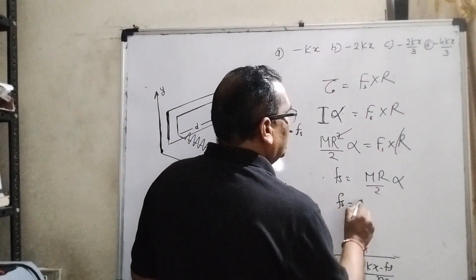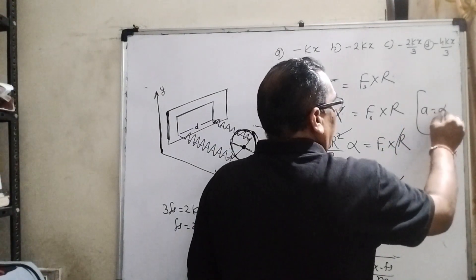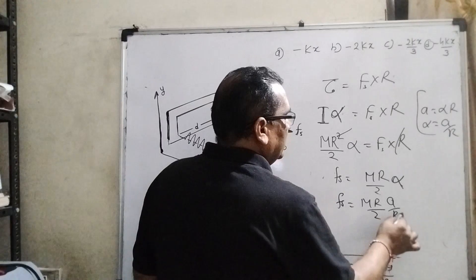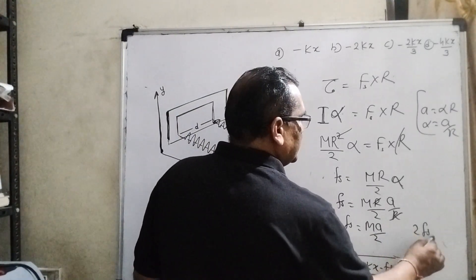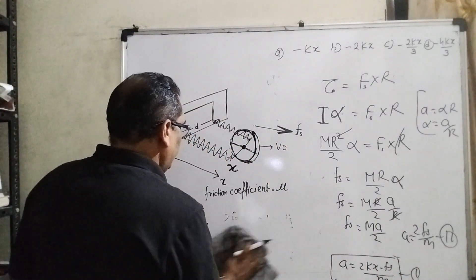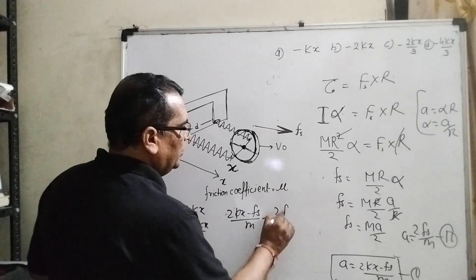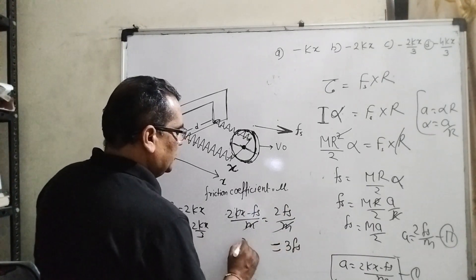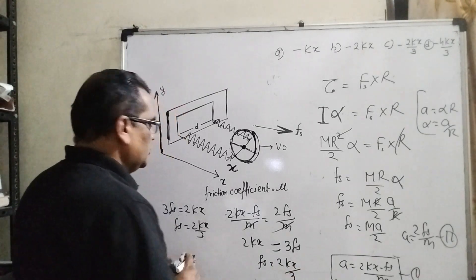The r terms cancel out, so f_s equals (mr/2)·α. Using the relation a equals α times r, we get α equals a/r. Substituting, the r's cancel and f_s equals ma/2, giving acceleration a equals 2f_s/m. This is the second equation. Comparing the first and second equations: (2kx minus f_s)/m equals 2f_s/m. Cancelling m and transposing, we get 3f_s equals 2kx, so f_s equals 2kx/3.